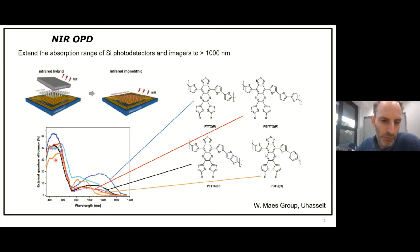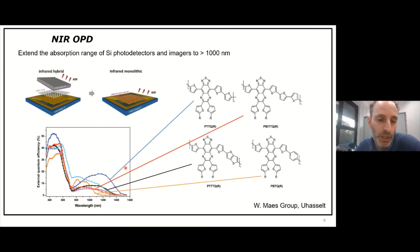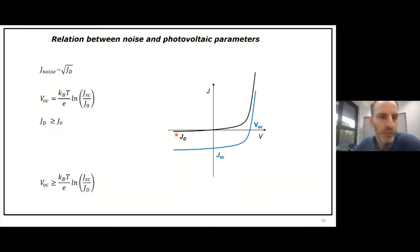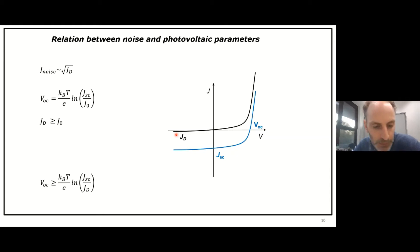To further optimize these devices and understand how far we can go: using the donor-acceptor concept on the polymer backbone, you can rather easily make absorbers going all the way to 2 microns or 1800 nm. But when we try those materials, we get extremely high dark currents and basically shorts. It's interesting to use physics to figure out how far into the infrared we can go, and whether it makes sense to pursue organic near-infrared detectors.